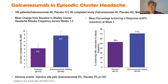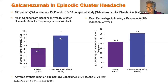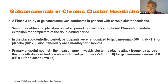Regarding emerging CGRP monoclonal antibodies, galcanezumab has been shown to be effective in episodic cluster headache. In a study of 108 patients (90 completed), 91% achieved a response at week 3 versus 53% in the placebo group, with an excellent side effect profile. Unfortunately, the EMA has not approved it and has asked for another trial. Galcanezumab and fremanezumab were both ineffective in chronic cluster headache, suggesting these agents may be more effective in episodic than chronic forms.